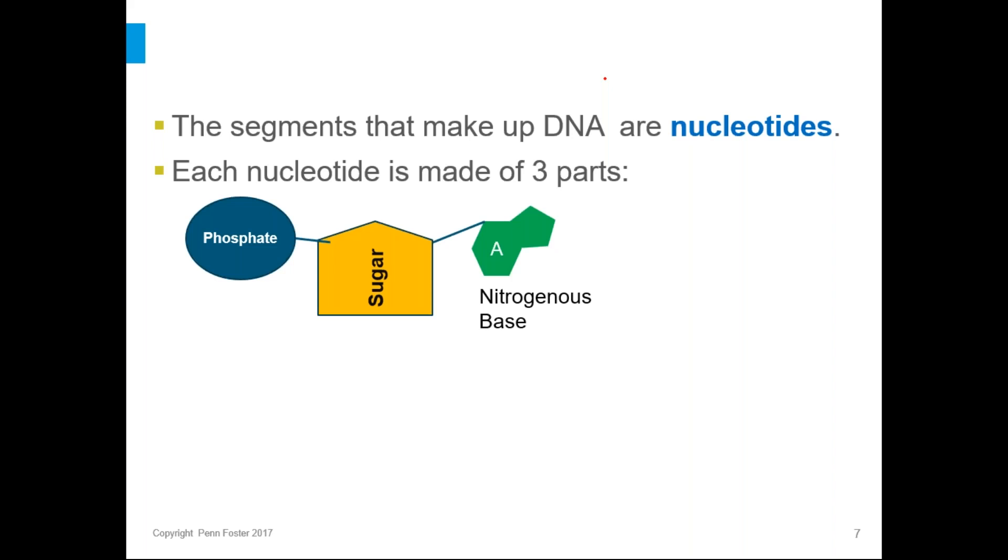Now, the two parts on the left here, the phosphate and the sugar, those are consistent. Those never change. Those make the backbone of the DNA that kind of hold it all together. And then the part on the right there, the third one, the nitrogenous base, that's what does the code. There's four different nitrogenous bases in the DNA, and the order in which those show up is what codes for things to happen.